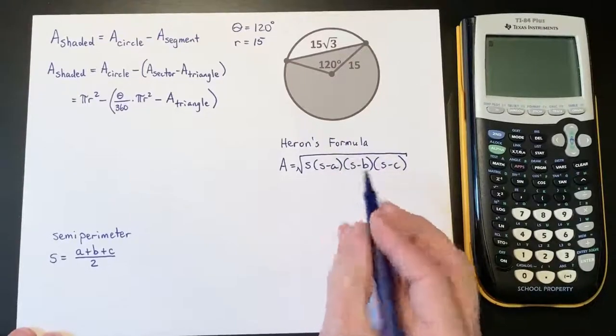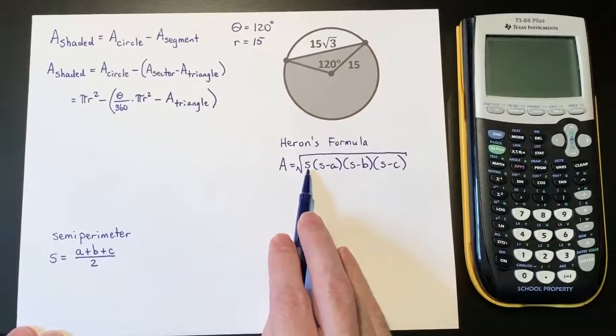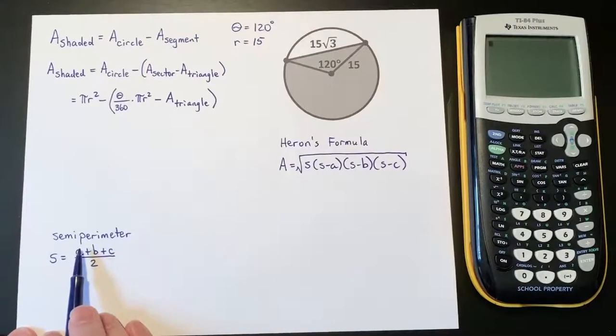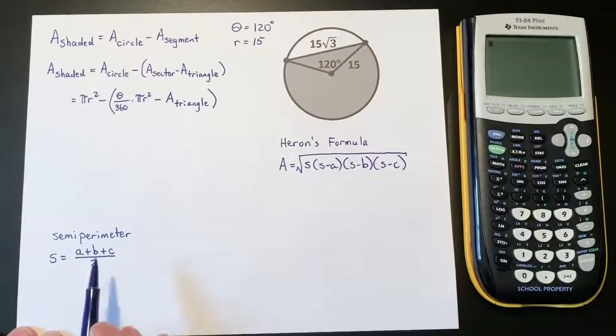So we're going to use Heron's formula, and in Heron's formula you'll notice there's an s. The s is referred to as the semi-perimeter and it has a formula of (a+b+c)/2. This is adding up the three sides and dividing by two.